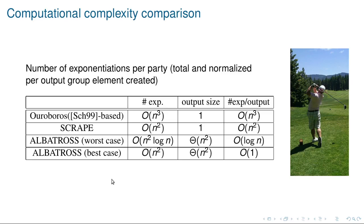All in all, our construction requires O(n² log n) exponentiations in the group per party to produce an output of size n². That means O(log n) exponentiations per output per party. In the best case, where every party has revealed their committed values and we don't need the expensive reconstruction phase, we have a constant number of exponentiations per output per party — three orders of magnitude below Ouroboros, which fits nicely with the nomenclature since our protocol is called Albatros.